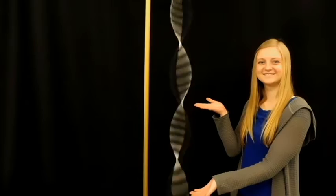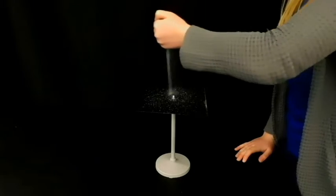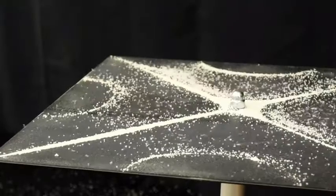As demonstrated by this wave machine, SAWs move a material in a back-and-forth motion, which also affects the matter surrounding it. For example, the SAWs produced on this Chladni plate displace the salt granules.